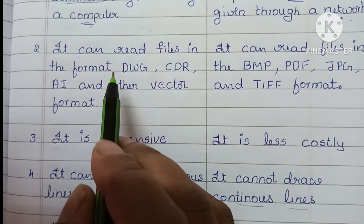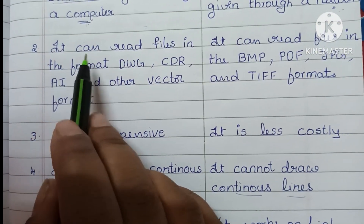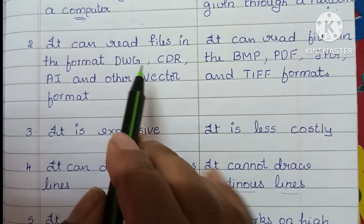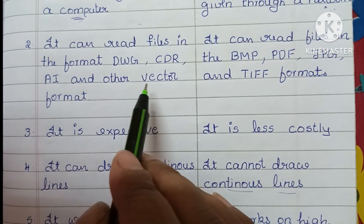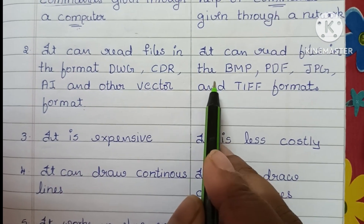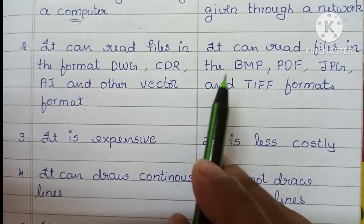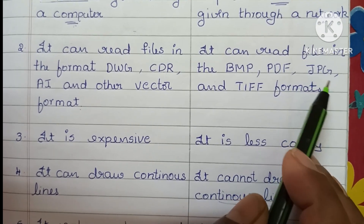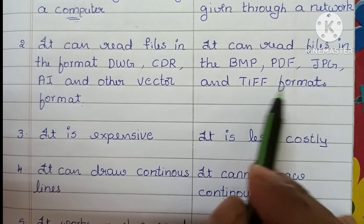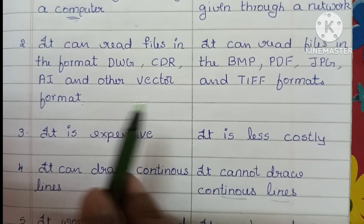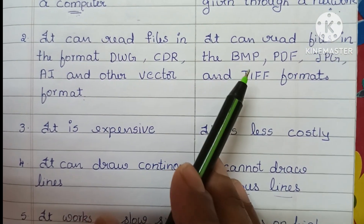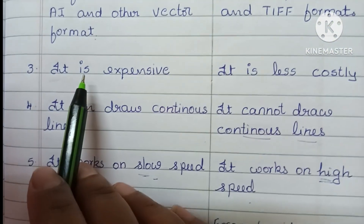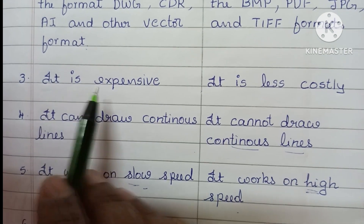The second difference is file formats. In a plotter, it can read files in the formats DWG, CDR, AI, and other vector formats. In a printer, it can read files in the BMP, PDF, JPG, and TIFF formats.